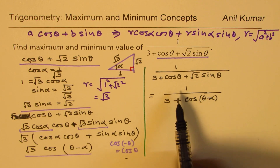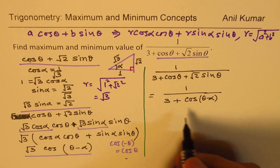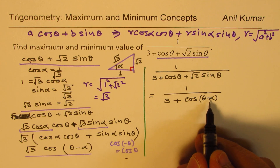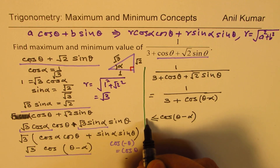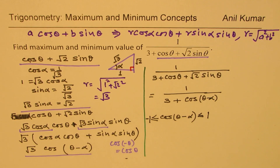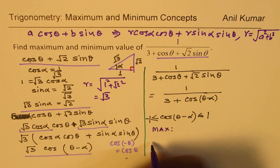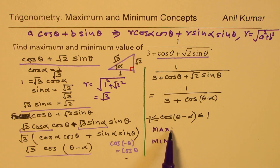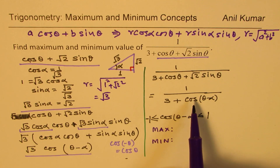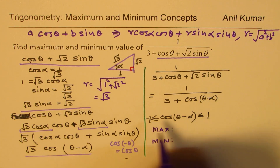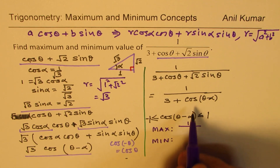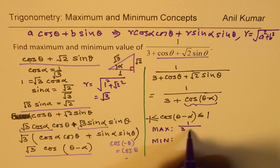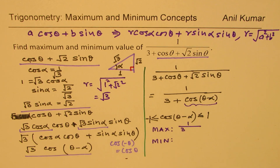Now we can easily figure out the maximum and minimum values. The value of cos(θ − α) is between −1 and +1. For maximum value, the denominator should be as low as possible, so we use −1. But we need to include √3, so √3 cos(θ − α) ranges between −√3 and +√3.